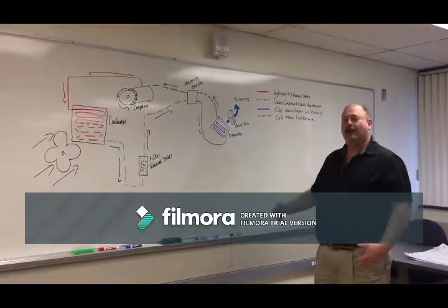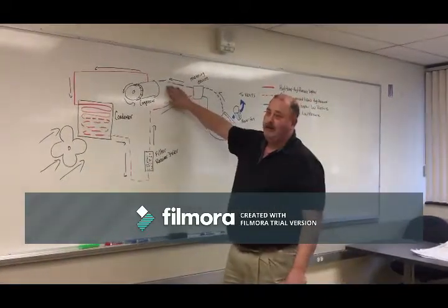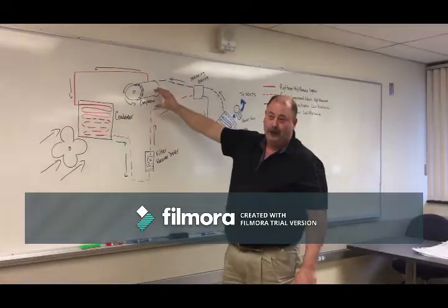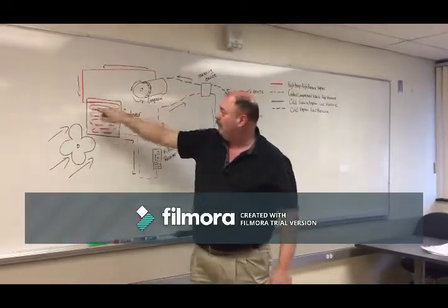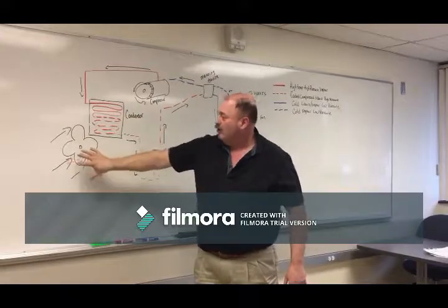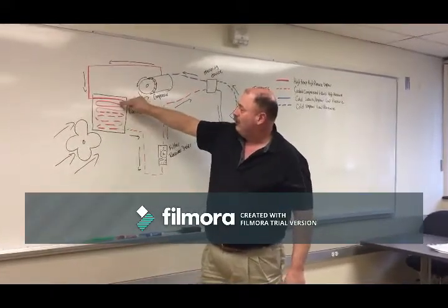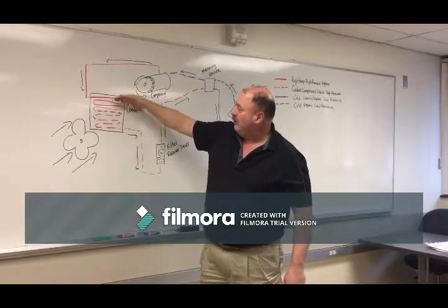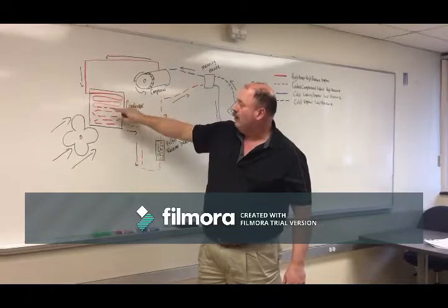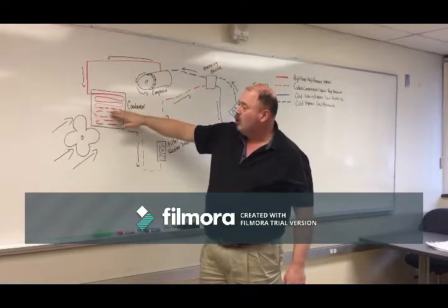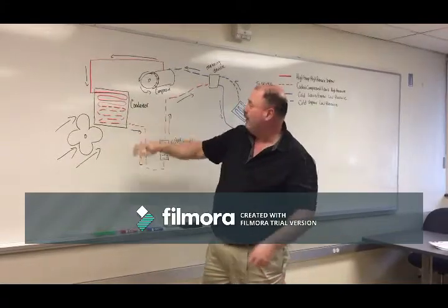Now let's talk about how the air conditioning system works. We take a vapor and compress it in the compressor to make it hot. We send the hot vapor up front to the condenser, right by your radiator, so the fan can blow on it. The hot vapor now has a cooling effect on it and it goes from a hot vapor to a cooler vapor. It still has some heat to it, but it's much cooler — we've taken some energy away from it.